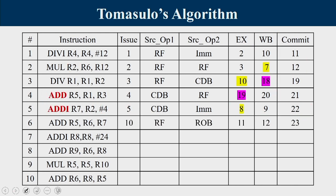The sixth instruction is another ADD. It tries to issue after cycle 5 but both reservation station entries for the adder are occupied by instructions 4 and 5. Instruction 5 writes back to CDB at cycle 9, freeing its reservation station. So instruction 6 can only be issued at cycle 10. Since all earlier instructions are issued in order, any instruction after instruction 5 cannot be issued before cycle 10.